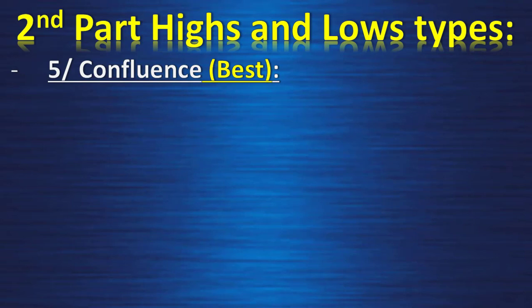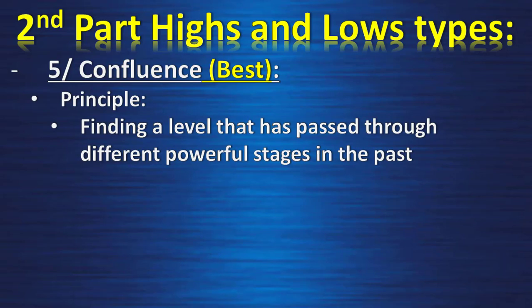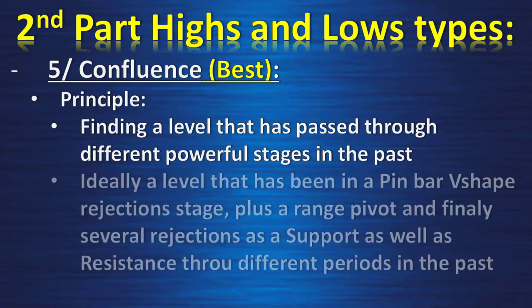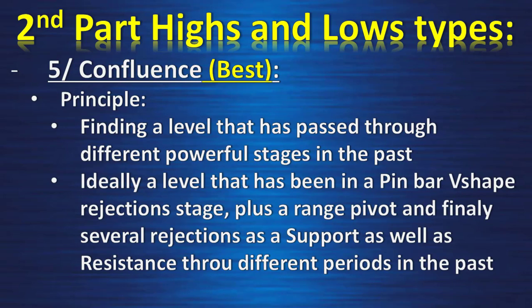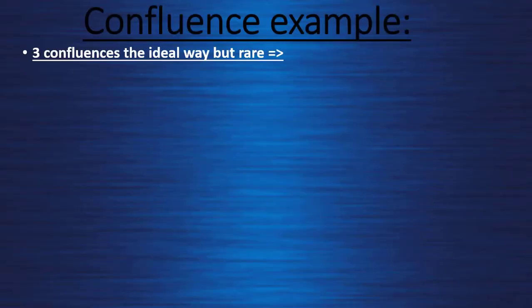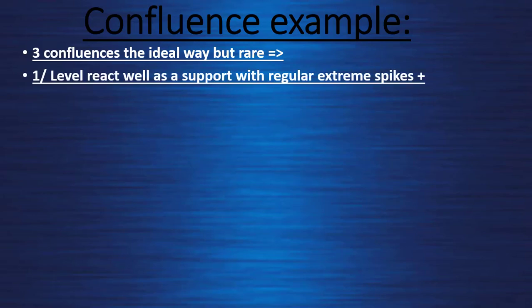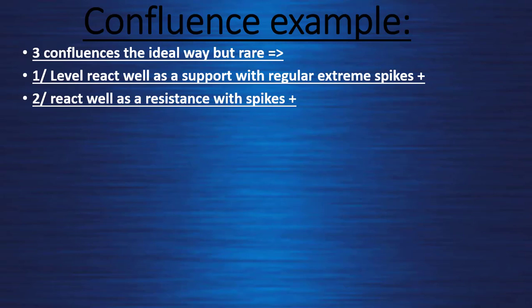The fifth part is confluence — the actual best way to find support and resistance. The principle is finding a level that has passed through different powerful stages in the past: ideally a level that has seen a pin bar or V shape rejection stage, has been a range pivot, and has had several rejections as both support and resistance across different periods. Three confluences is ideal but very rare. First: a level reacts well as support with regular extreme spikes. Second: reacts well as resistance the same way with spikes. Third: has been in the middle of a range as a pivot line.